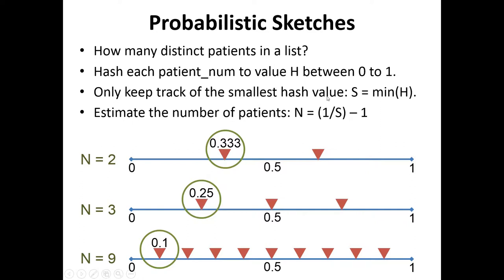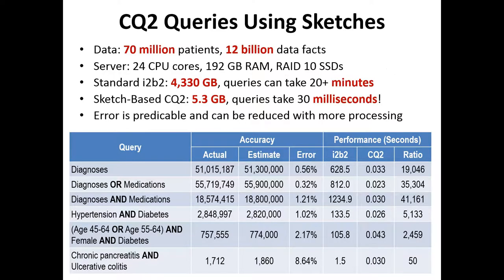That's a really bad single estimate — there's huge error — so you create multiple hash functions and store multiple values. We actually store 32,000 of these hash values for every concept in an i2b2 ontology. The sketch database is still far, far smaller than your original i2b2 which may have billions of data points. Here's an example: we ran this on a national claims database with 70 million patients and 12 billion facts. Standard i2b2 takes up about four terabytes of data and queries can easily take over 20 minutes. In our sketch-based version of i2b2, it's only five gigabytes of data and queries take on the order of milliseconds.